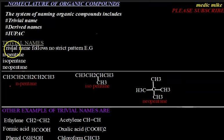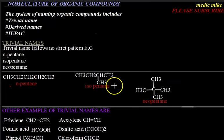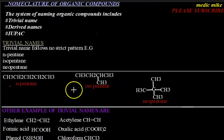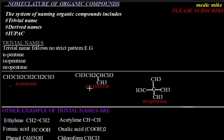The second example of a trivial name is isopentane. Isopentane is an isomer of pentane. If we look at it in the aspect of IUPAC naming, we'll get to that shortly.